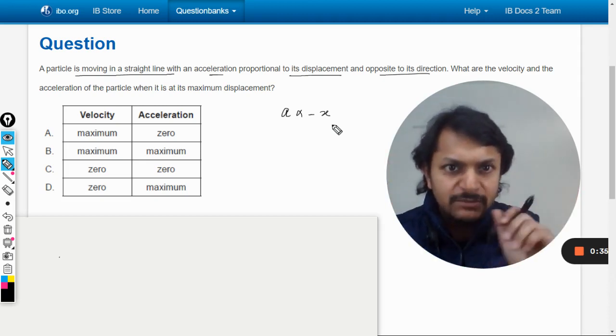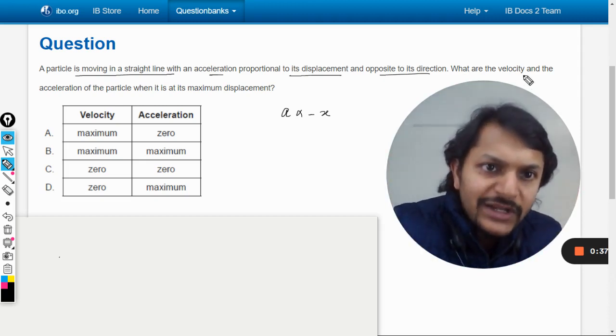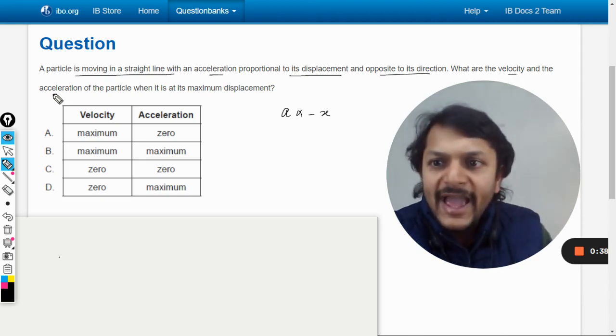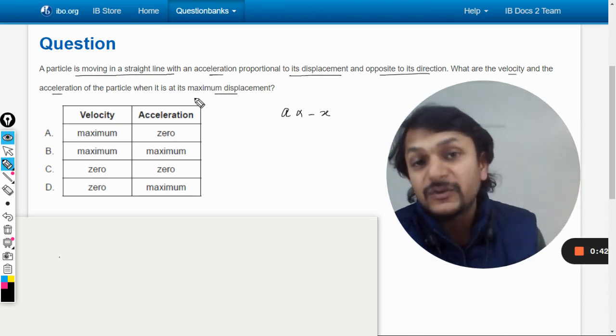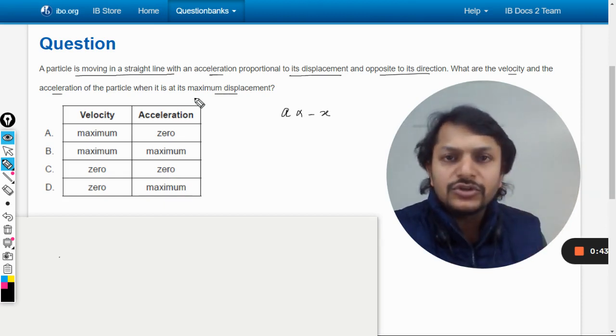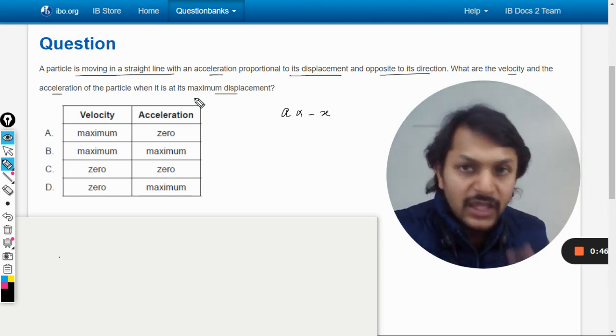What are the velocity and acceleration of the particle when it is at maximum displacement? In simple harmonic motion, what is the maximum displacement? It's amplitude. So we're talking about properties at amplitude.